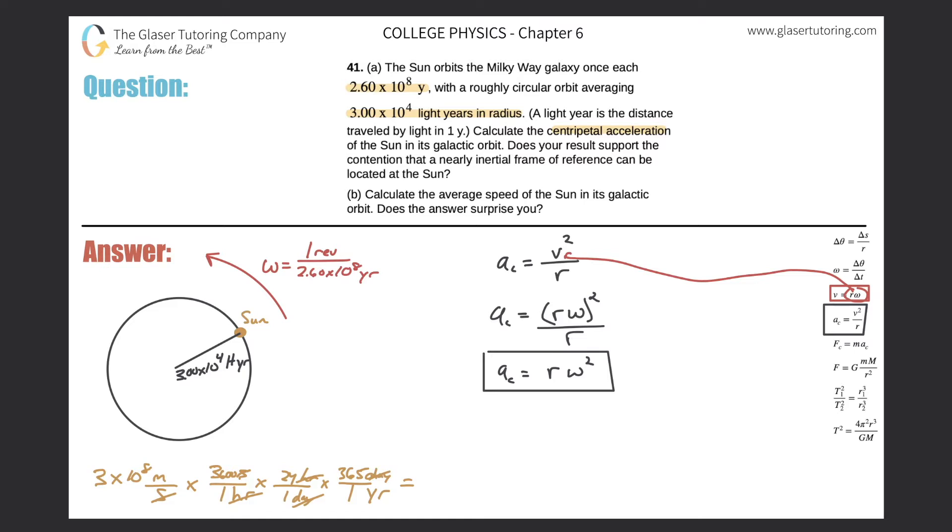So this is three times 10 to the eight times 3,600 times 24 times 365. And it comes out to be a value of 9.46 times 10 to the 15th. And that is now meters per year. So this is the distance of one light year.